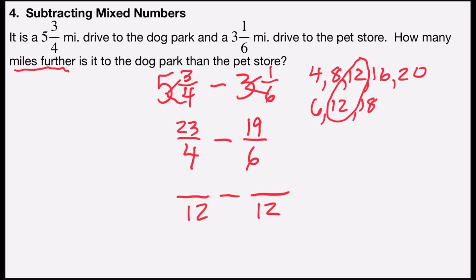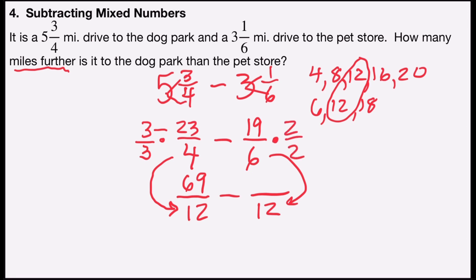I'm going to rename the numerators. First, what number times four gives me twelve? That's three, so I'll multiply by the form of one, three over three. Three times twenty-three is sixty-nine, so twenty-three-fourths is renamed as sixty-nine over twelve. Then, what number times six gives me twelve? That's two, so I'll multiply by two over two. Two times nineteen is thirty-eight, so nineteen-sixths is renamed as thirty-eight over twelve.